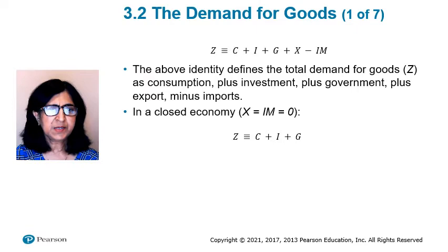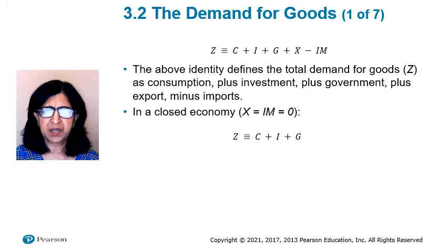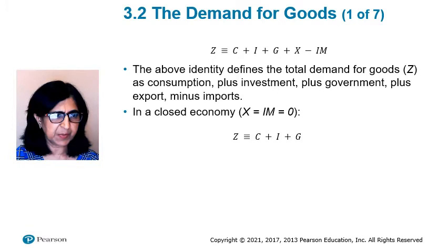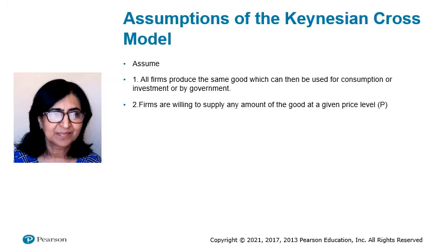Section 3.2: The Demand for Goods. We now have what we need to develop our first model of output determination — the Keynesian Cross Model. Denote the total demand for goods by Z. Using the decomposition of GDP from Section 3.1, we can write Z equals C plus I plus G plus X minus IM. This identity defines the total demand for goods as consumption plus investment plus government spending plus net exports. We now have to think about the determinants of Z, and to make the task easier, let's make a number of simplifications.